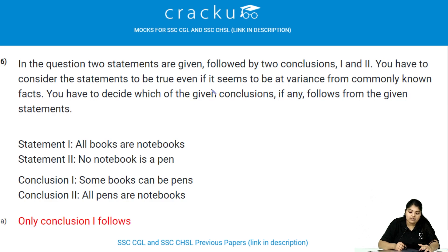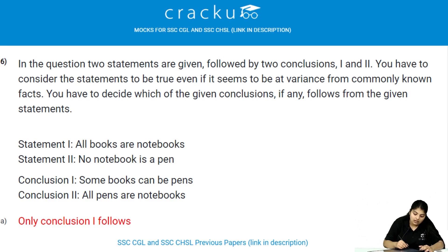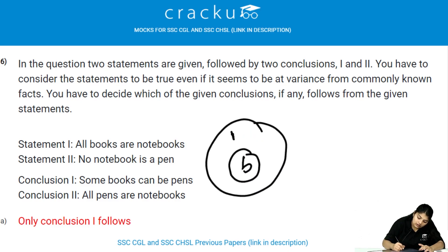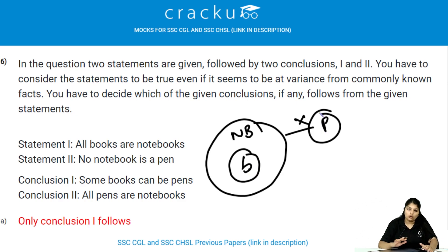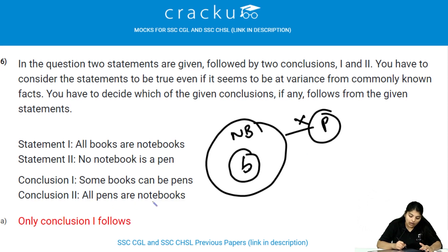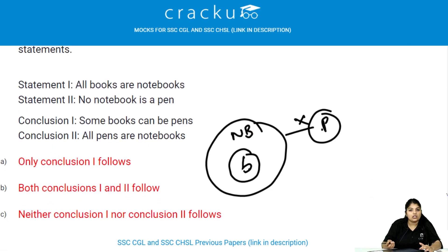In the following question, two statements are given followed by two conclusions — this is a syllogism question. Always draw a diagram for syllogism. The statements are: all books are notebooks, and no notebook is a pen. Conclusion 1: some books can be pens — this is wrong because all books are notebooks and no notebook is a pen. Conclusion 2: all pens are notebooks — this is also wrong. Therefore, the answer is neither conclusion 1 nor conclusion 2 follows.